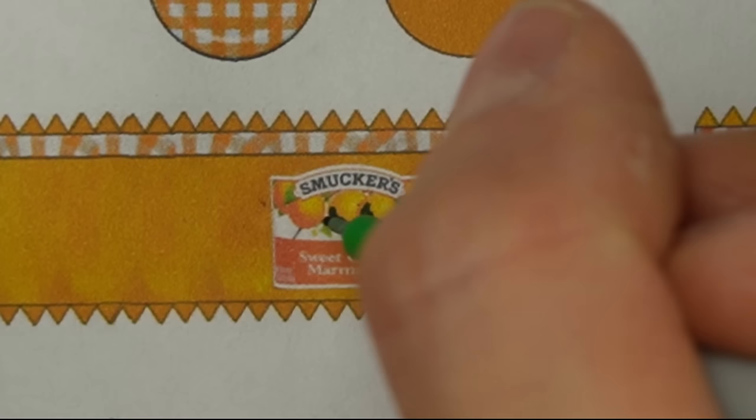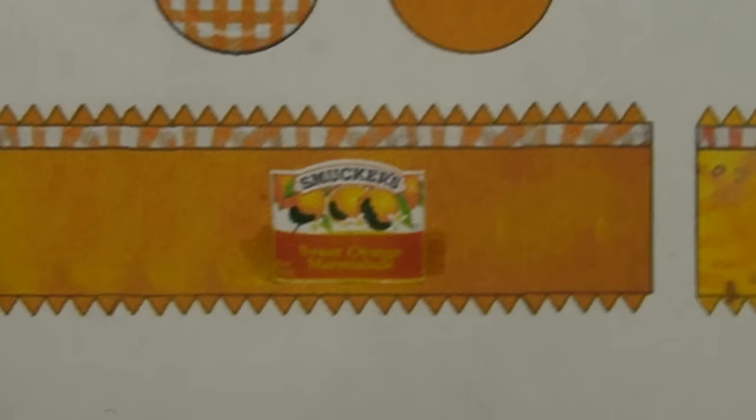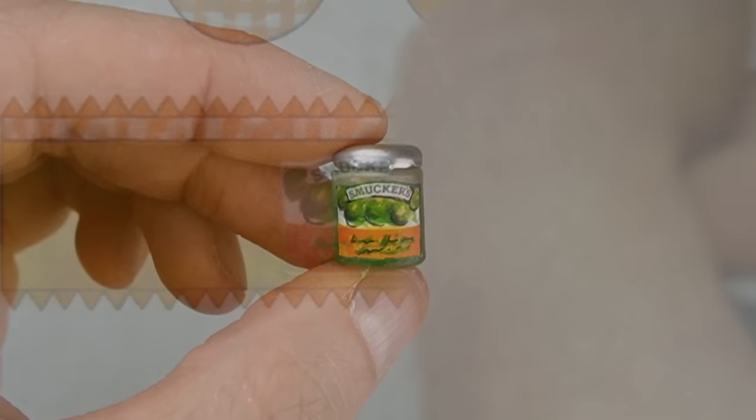I had a large green jar with no lid so I'm using some markers to transform this marmalade label into a lime jelly label apparently. As little Gretchen would say it was looking a little bit pre-k but outlining it with black made it look a lot better.